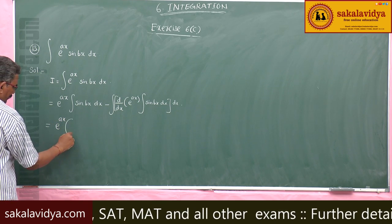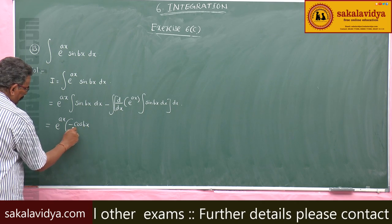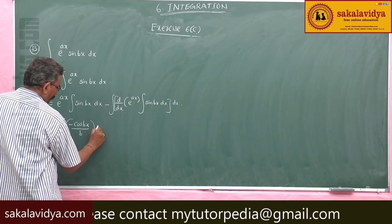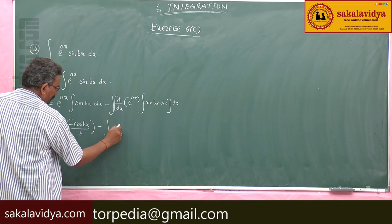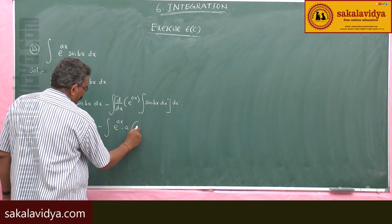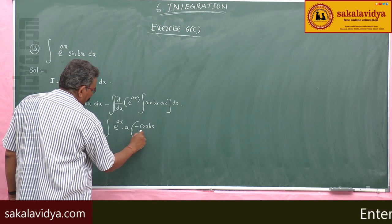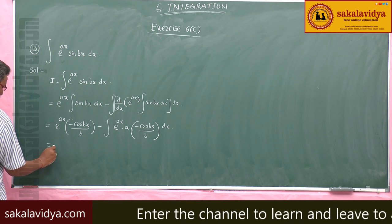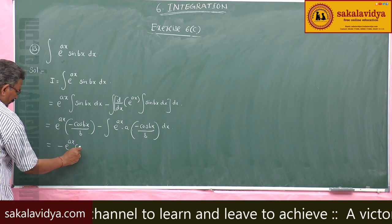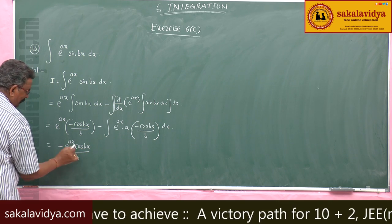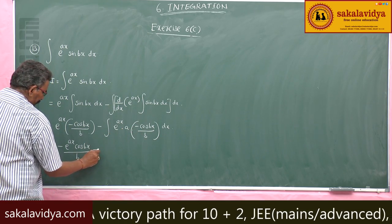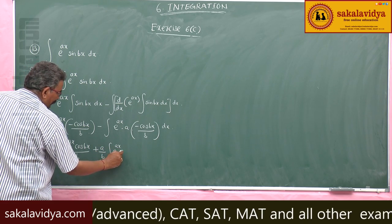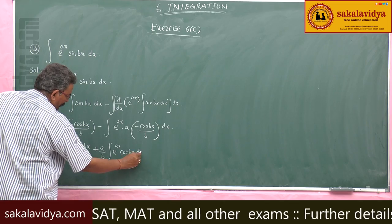Now, e power ax times minus cos bx by b. Derivative of e power ax is e power ax into a, times minus cos bx by b dx. This gives minus e power ax cos bx by b, plus a by b common, plus a by b integral e power ax cos bx dx — say equation 1.